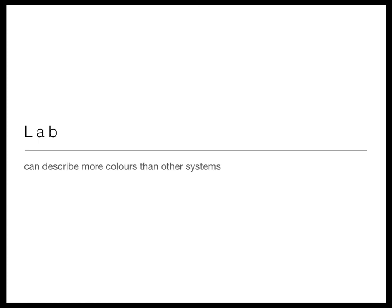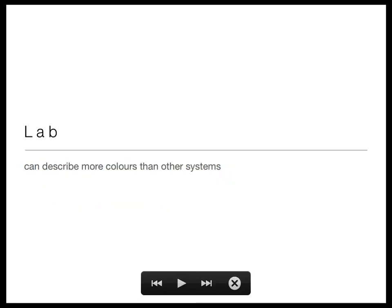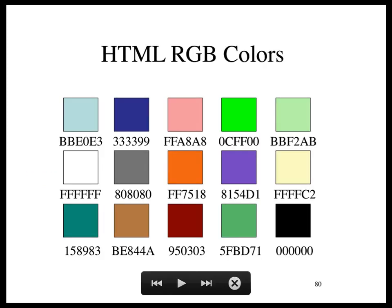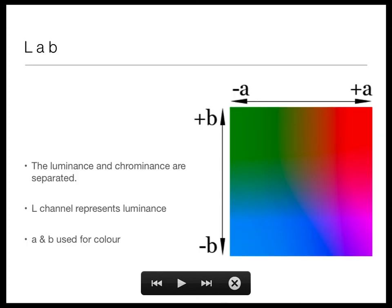So yesterday we saw hue, saturation, brightness. That was red, green, and blue. There's a whole other system now — the Lab system. The L is typically uppercase and the a and b are lowercase, sometimes written L*a*b*. In this system we have luminance and chrominance.